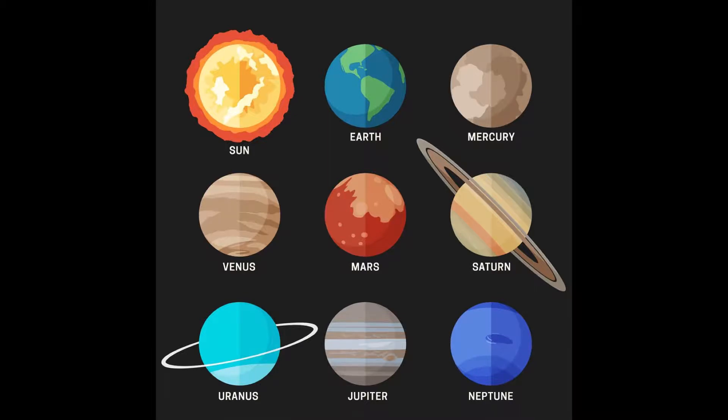Earth is the planet people live on. Mercury is the planet closest to the Sun. It's also the smallest planet.